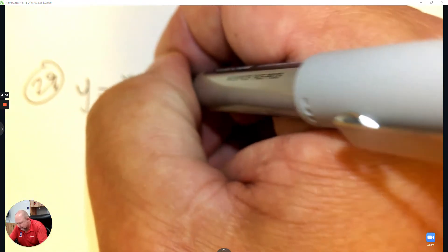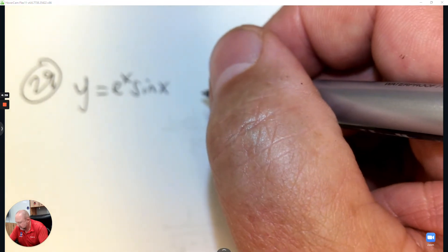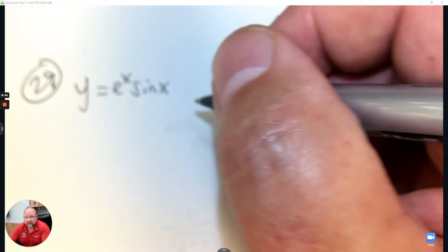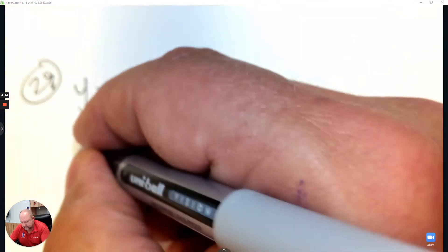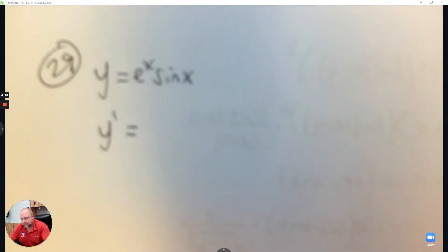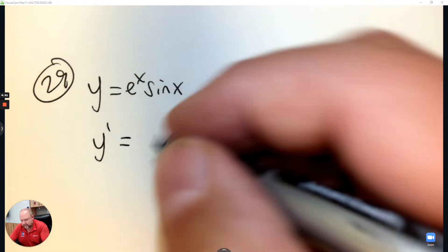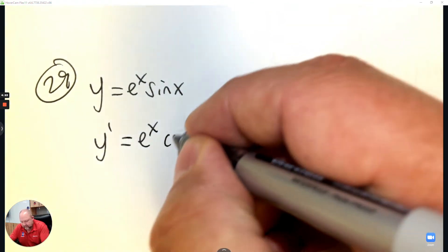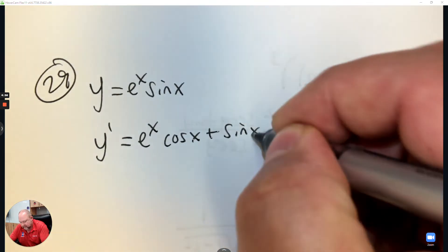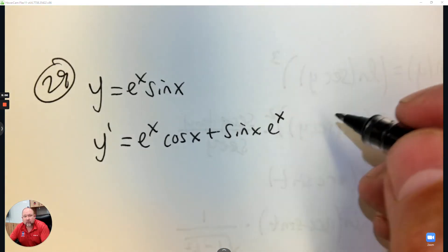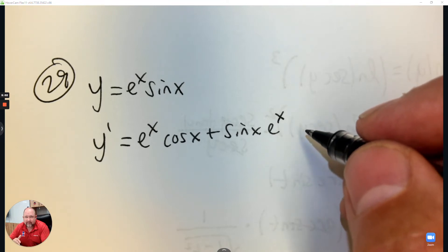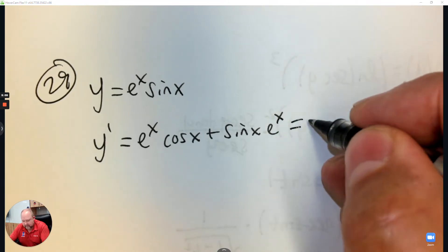Number 29. Without using a calculator, find the x values where y equals e to the x sine x has horizontal tangents from negative pi to pi. The word tangent means we're going to take the derivative. So let's start there, then we'll talk about horizontal and what that means. This is the product rule: the first times the derivative of the second plus the second times the derivative of the first. Horizontal tangent means when the derivative is zero.